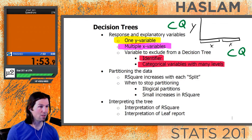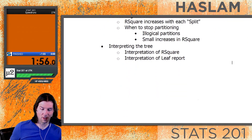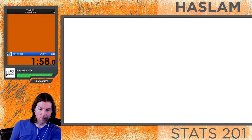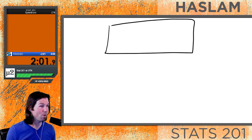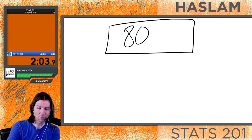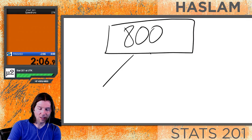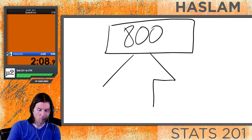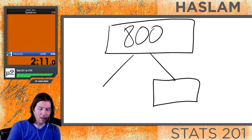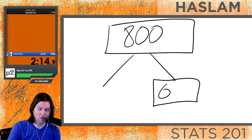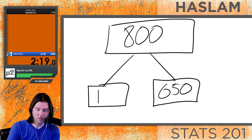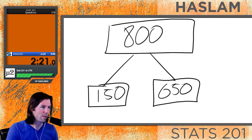Next we need to understand what partitioning the data means. We take our data - all in one big clump, maybe 800 observations - and then section people off into different groups via the X variables. They're not always equally split; sometimes you might have 650 people in one group and 150 in another.